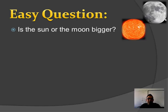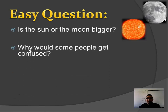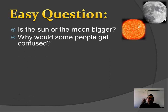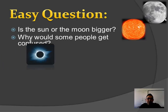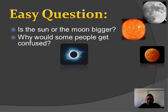Easy question — is the Sun or the Moon bigger? The Sun is bigger, but they actually look like they're about the same size when you compare them in the sky. You shouldn't stare directly at the Sun — too much light will damage your retina. The Sun is a lot larger but also a lot further away compared to the Moon, so from our perspective they look about the same size.